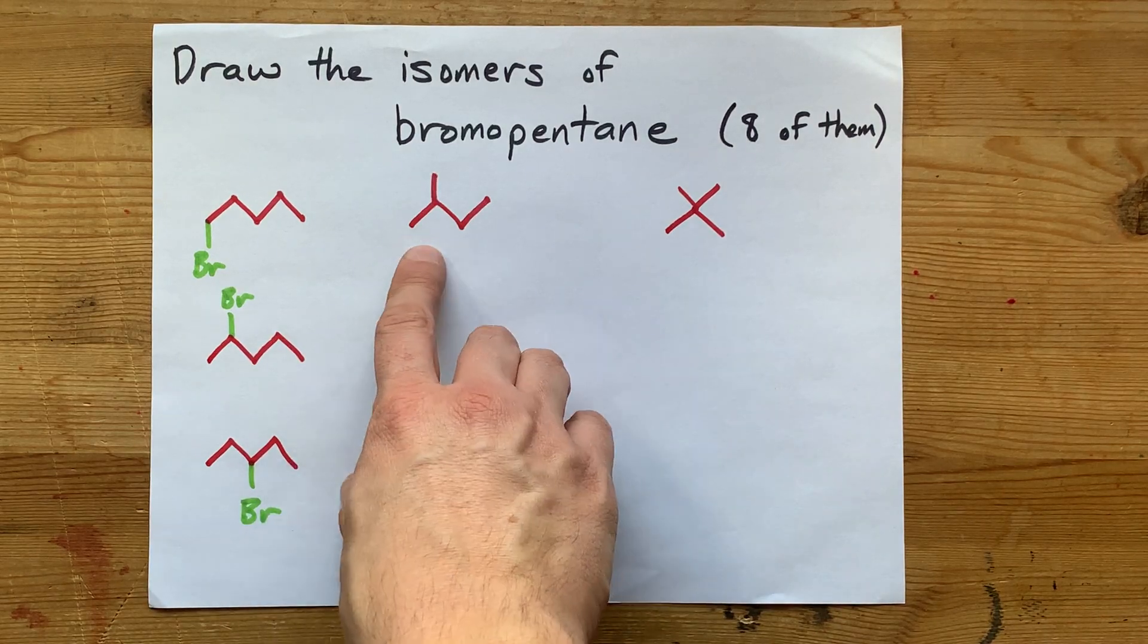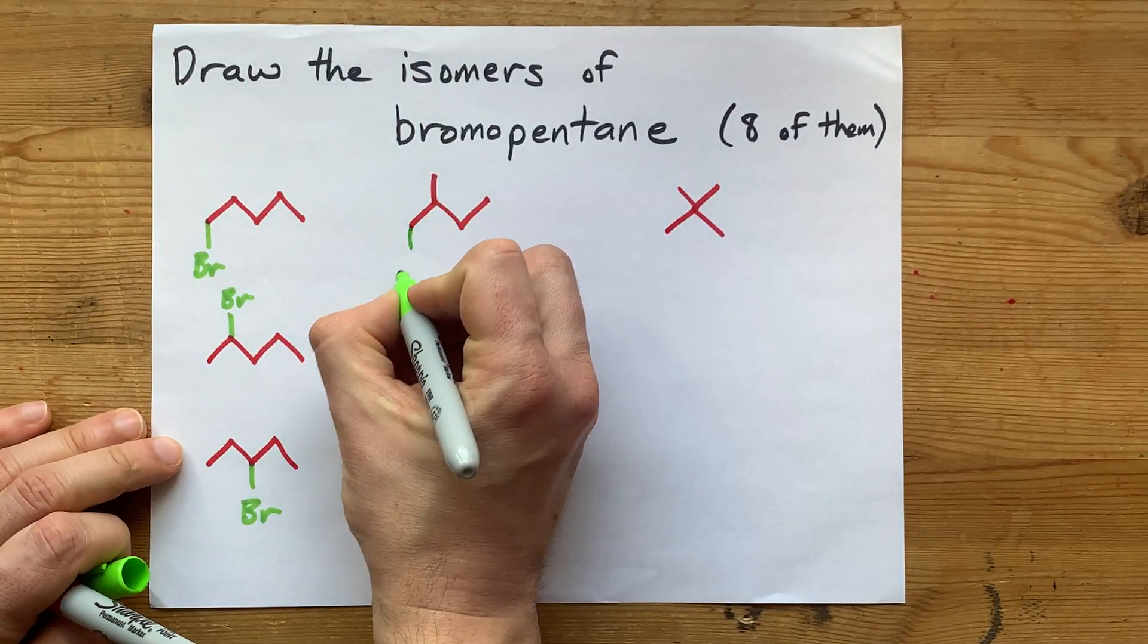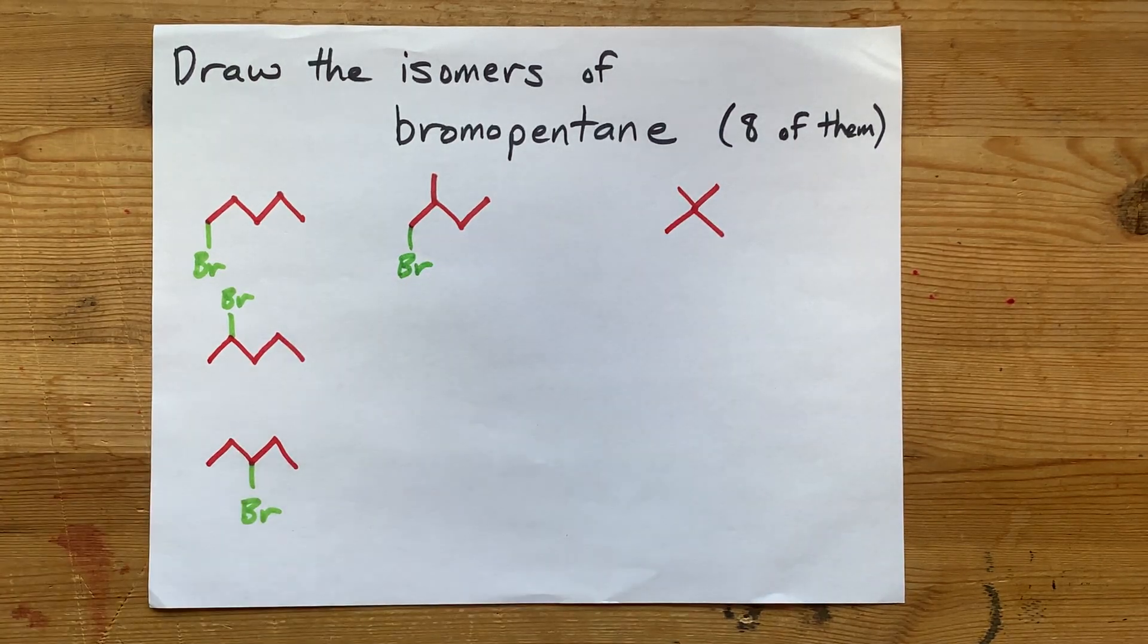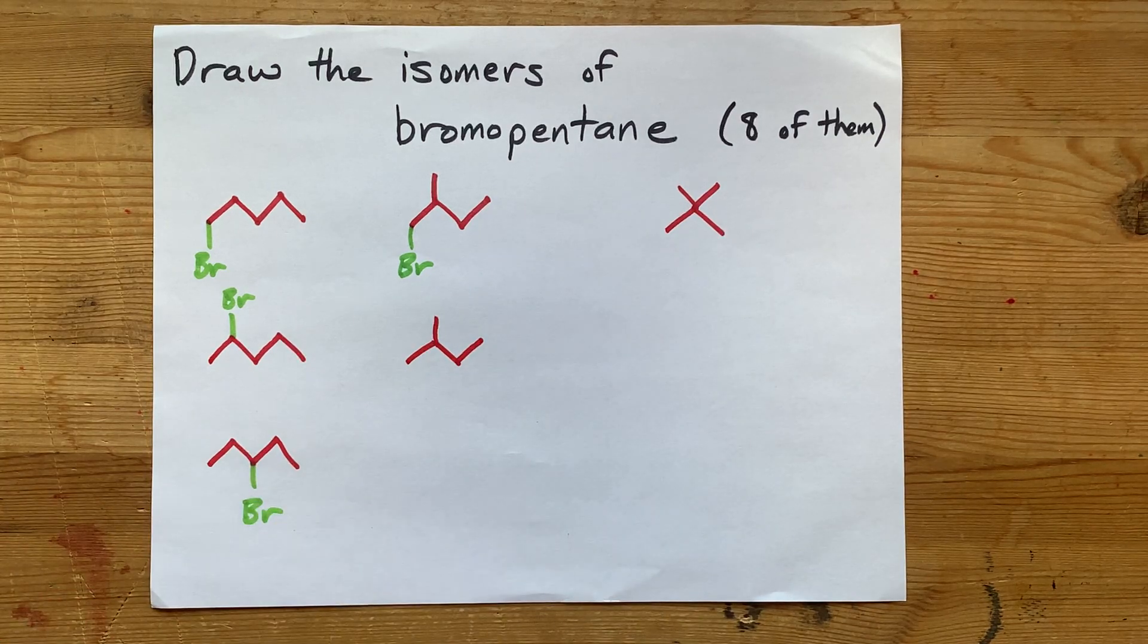Where are the distinct places that I can put bromine on this molecule? Well, if I put it on the first carbon, yeah, that's a possibility. Let me redraw the backbone of that molecule for you.